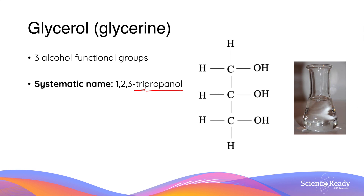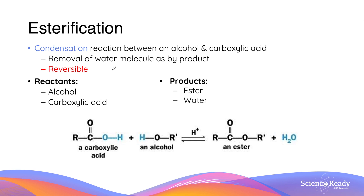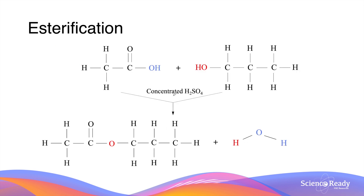In order to understand the formation of triglyceride from fatty acids and glycerol, I want to remind you of the formation of esters. Esters are formed from a condensation reaction between a carboxylic acid and an alcohol functional group. Besides forming the ester molecule, a water molecule is also formed as a byproduct. This reaction is reversible. For example, ethanoic acid reacts with 1-propanol to produce propyl ethanoate, which is the ester, and a molecule of water.